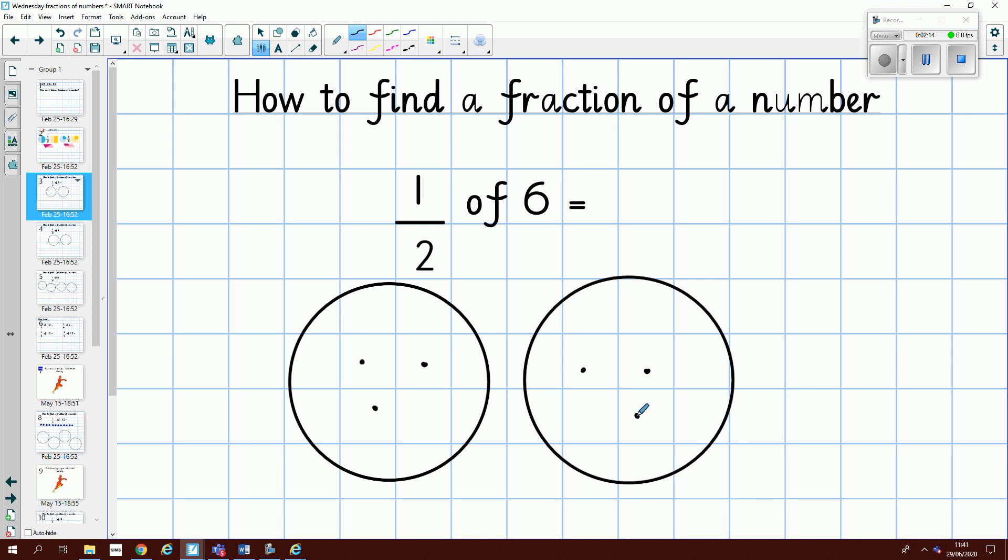I've shared them between the two groups. Now, my numerator is one. So I'm going to just look at one of my groups and I'm going to count it up. One, two, three. So half of six is three.